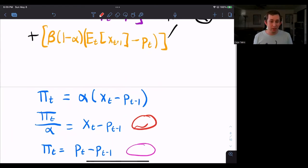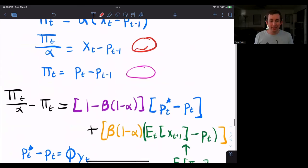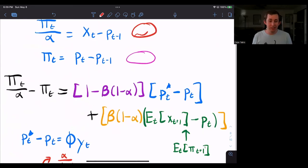Again, that just follows from the equation for inflation. So now I can just go like this. Then I can use the real rigidity equation to say that P T star minus P T is just phi times Y T.